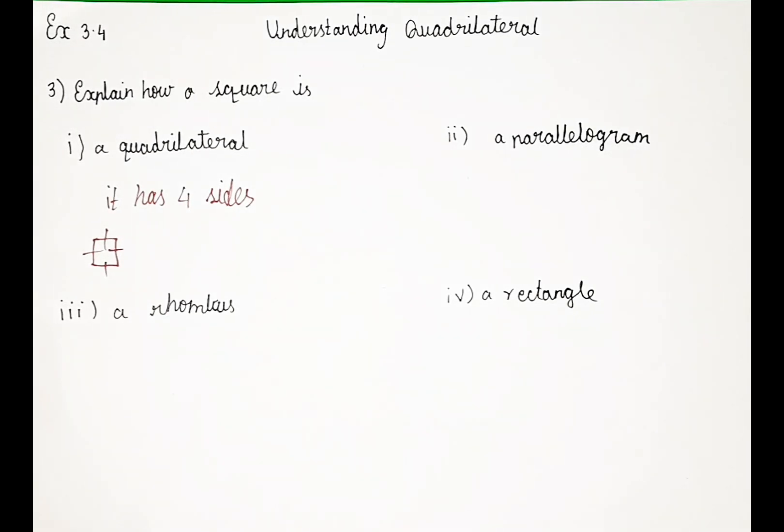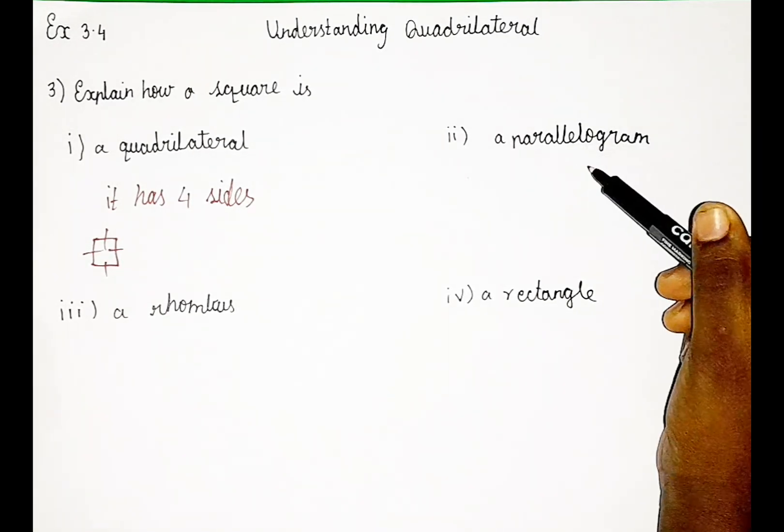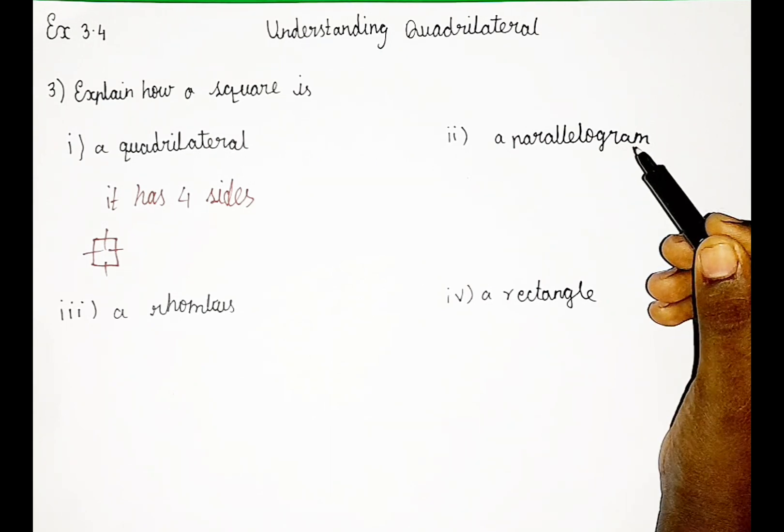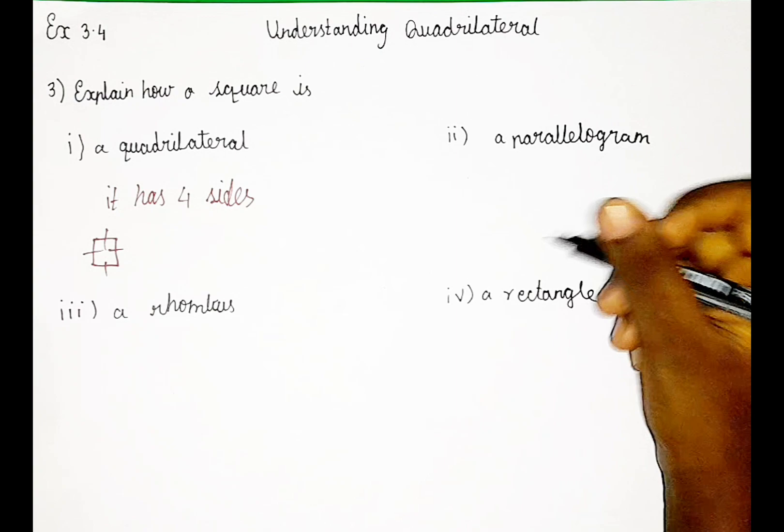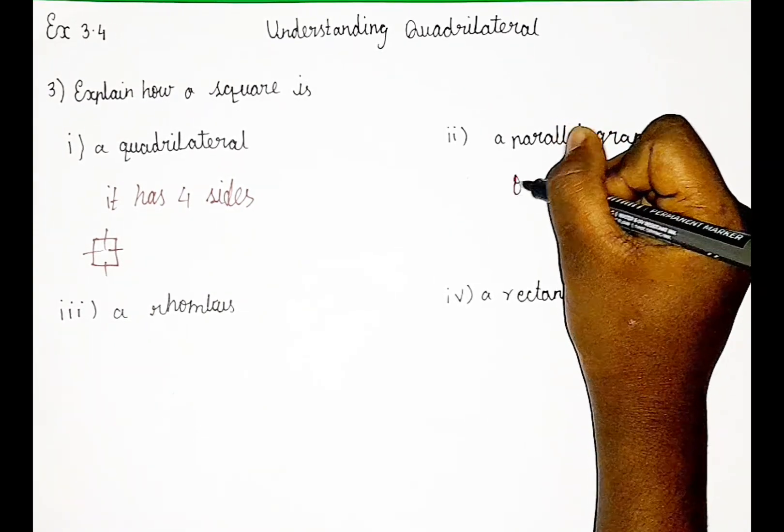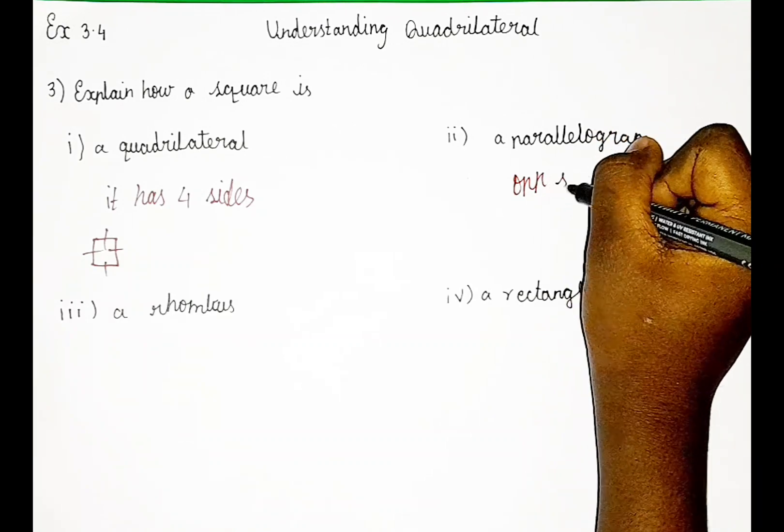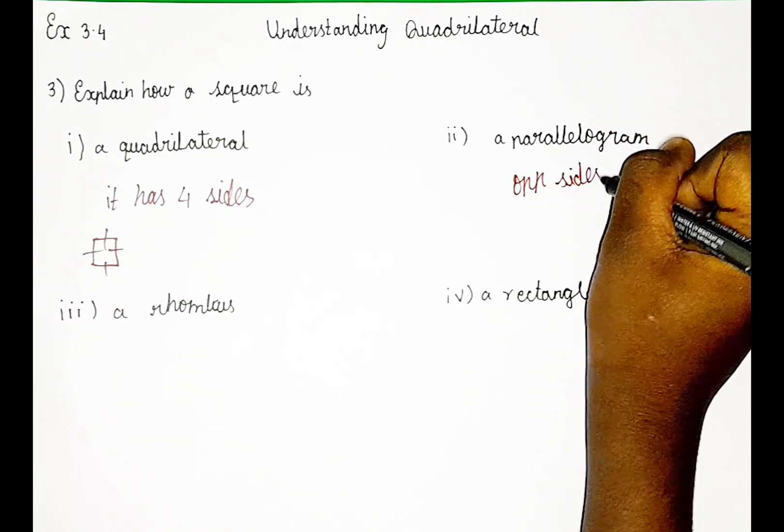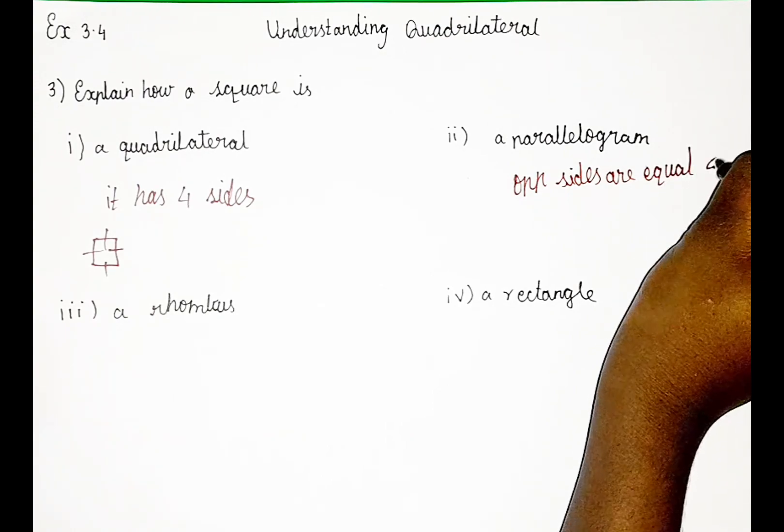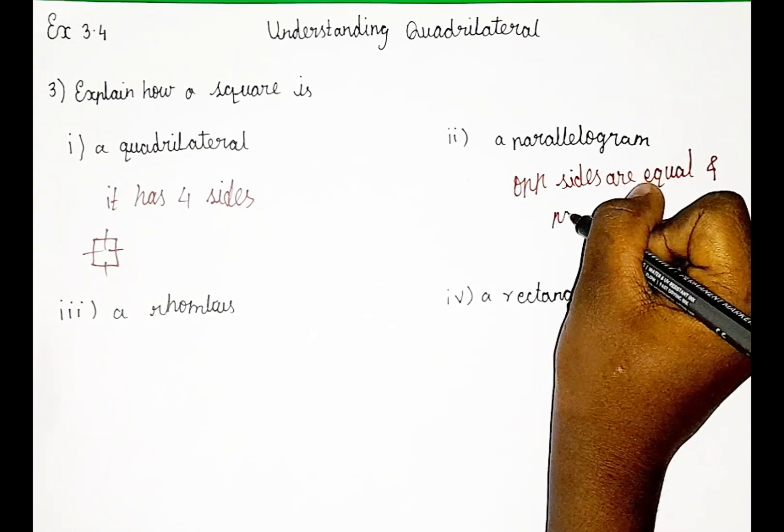So in second substitution, they have asked how a square is a parallelogram. So this is really easy. So in parallelograms, opposite sides are equal and parallel. As you guys know, let me write.